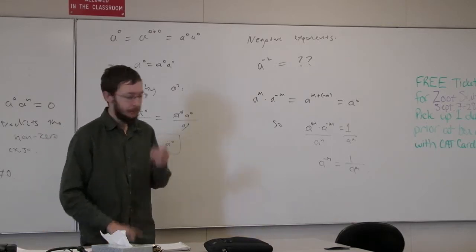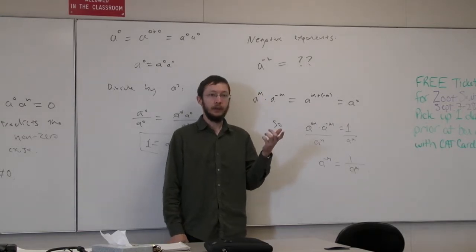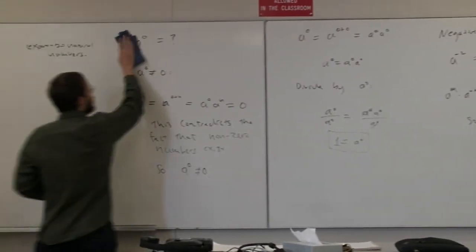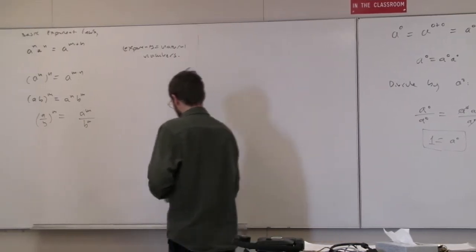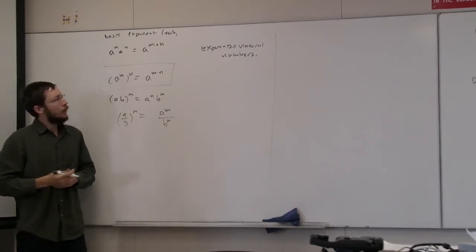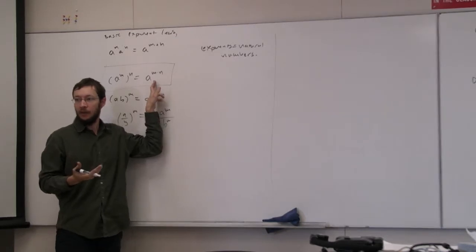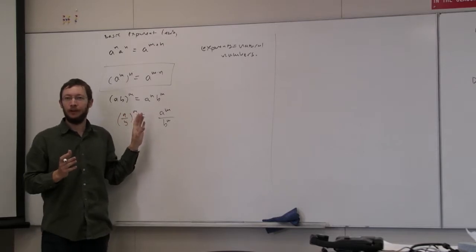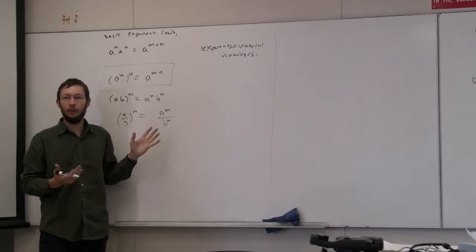The next class of exponents we need to define is rational exponents, where we have a fraction in the exponent position. That's going to be related to the power-of-a-power exponent law. We certainly want this exponent law to hold regardless of what type of exponent you have — it wouldn't make sense to have different exponent laws for different types of numbers. We expect all these exponent laws to hold even for more exotic numbers.